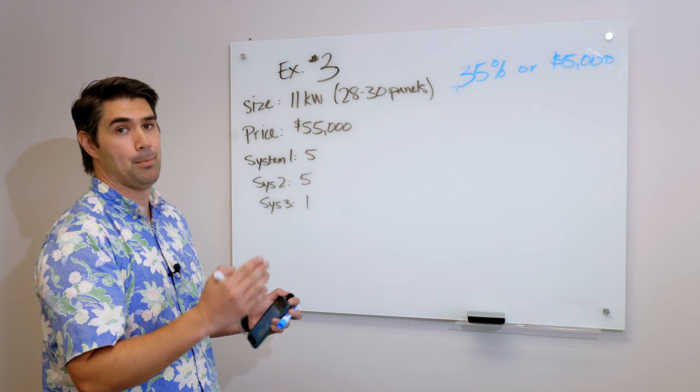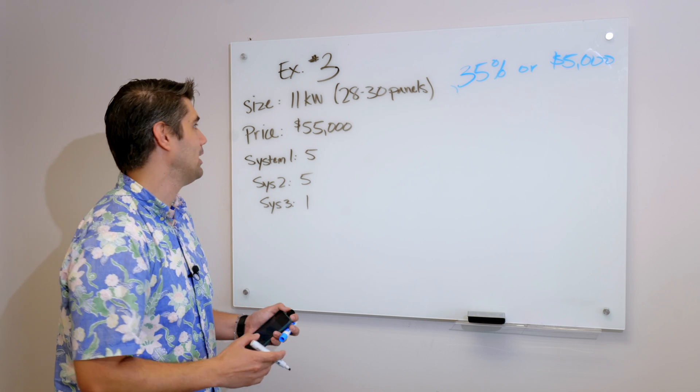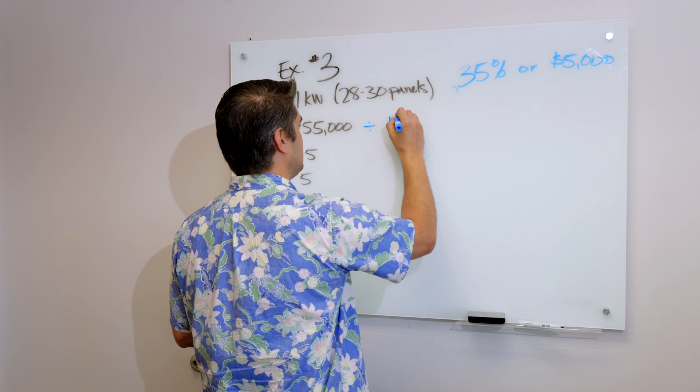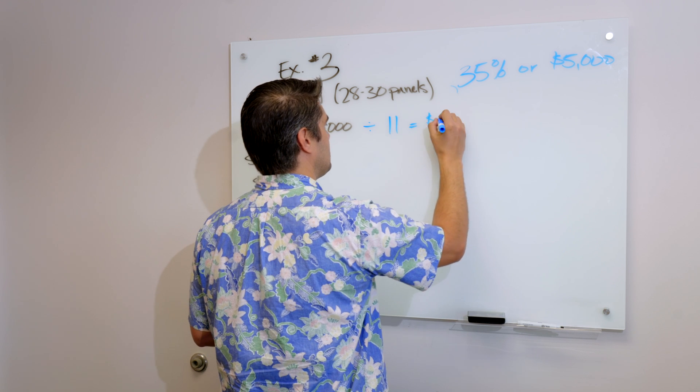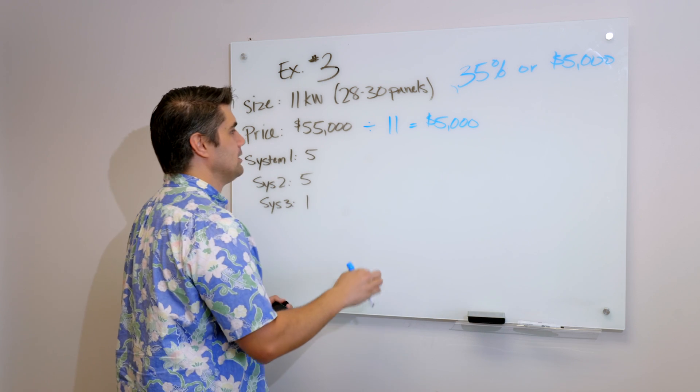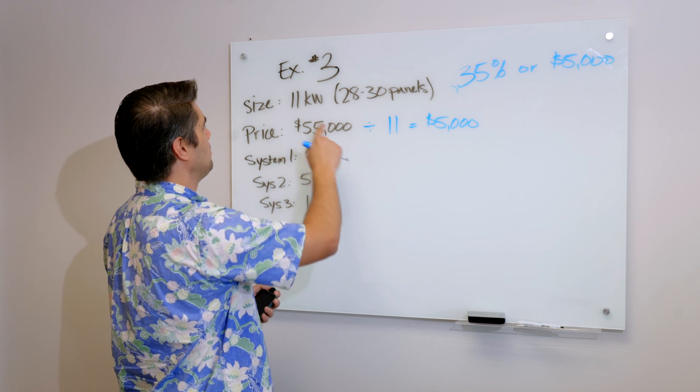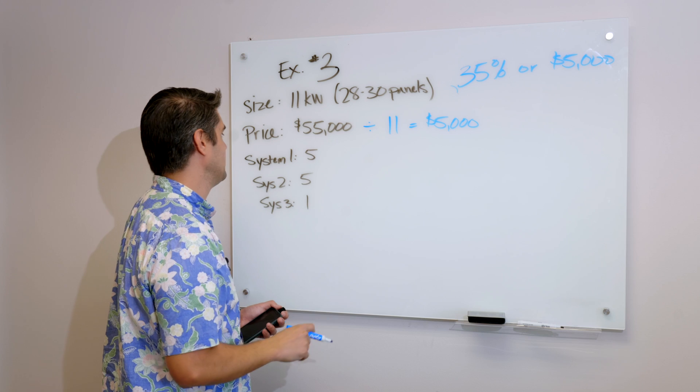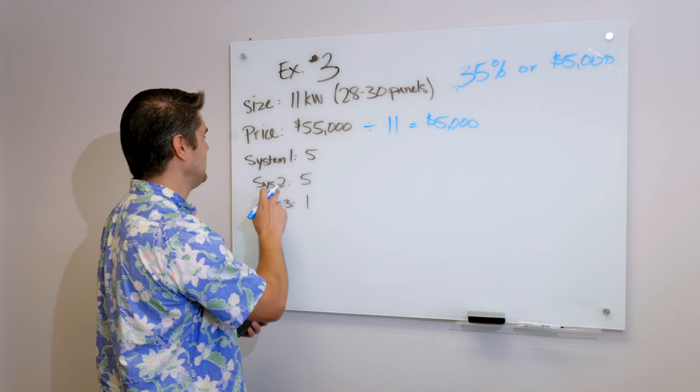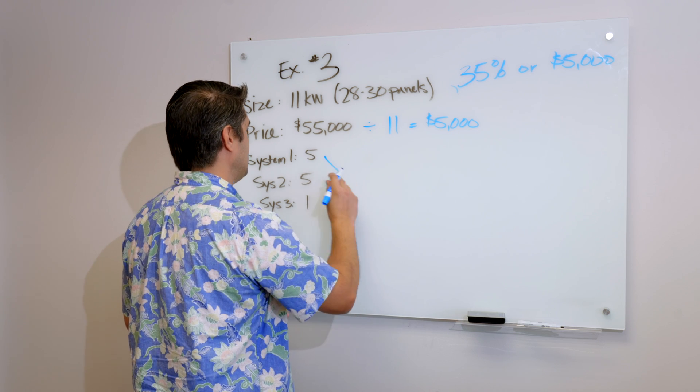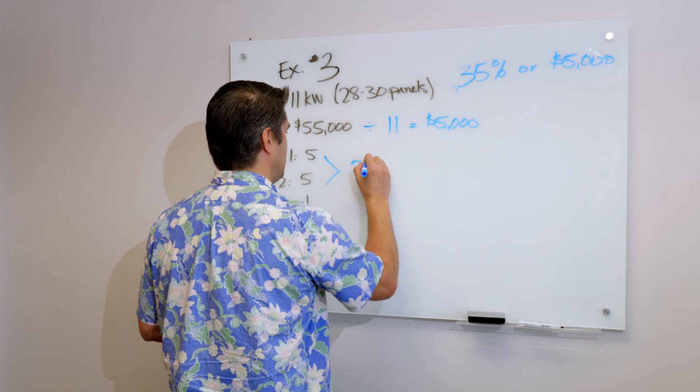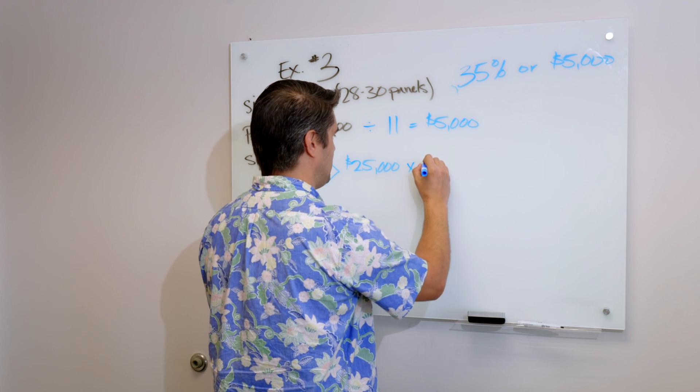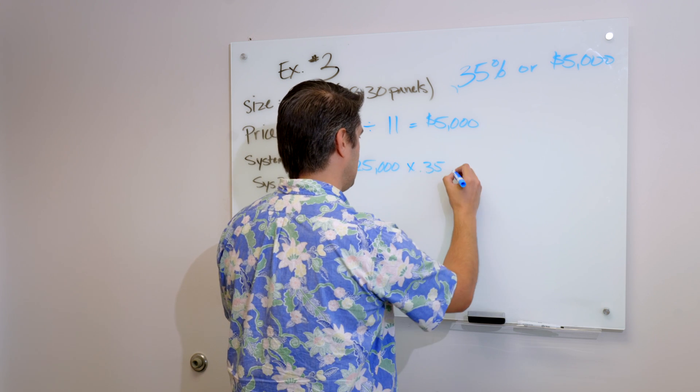Now, let's do the same math and figure out how much am I paying per kilowatt? I made these numbers really easy so I could figure it out without a calculator. So $55,000 divided by 11 kilowatts. $55,000 divided by 11 equals $5,000. So now that I know I'm paying $5,000 for every one kilowatt, I take $5,000 times 11 kilowatts, that gives me my $55,000 total price number.